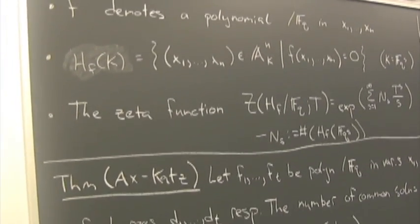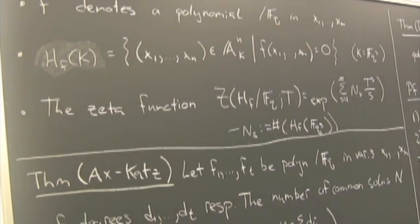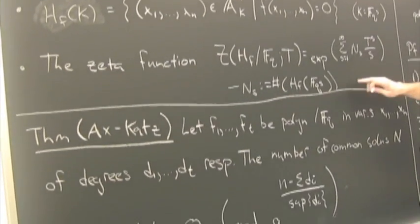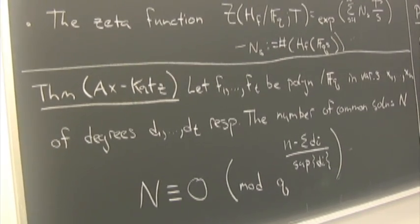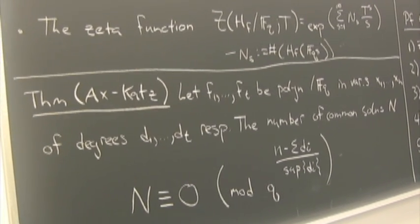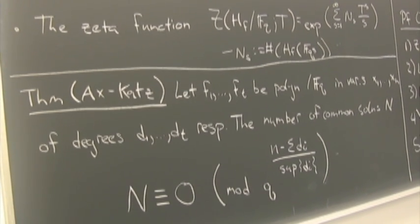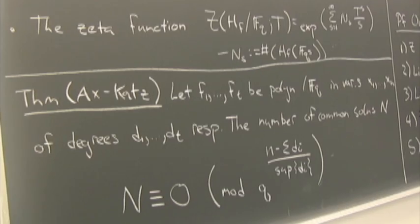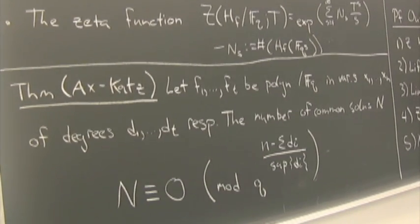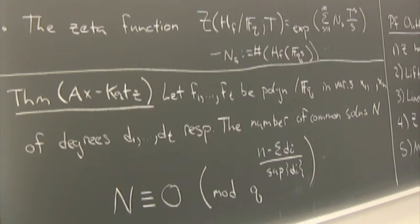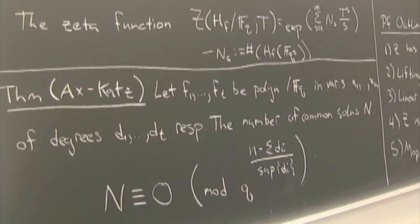It totally implies that if you know finitely many of these N_S's — these are the number of solutions over a given field — you can get them all. You can get some numbers Alpha_1, ..., Alpha_T and Beta_1, ..., Beta_U, and they're going to give you a formula for all the N_S's.